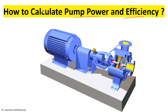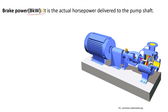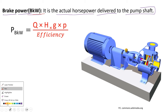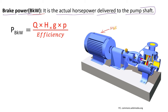So what is brake power? Brake power is also known as BKW. BKW is the actual horsepower delivered to the pump shaft. If you look at this figure of the centrifugal pump, you can see the motor, the shaft of the motor, and the pump shaft.